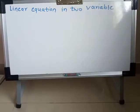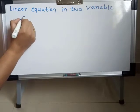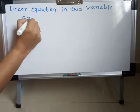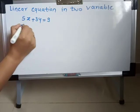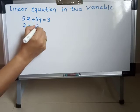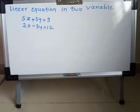In our book, practice set 1.1, we have the first activity question. The activity says: complete the following equations. The equations are 5X plus 3Y is equal to 9, and 2X minus 3Y is equal to 12. We need to solve these equations and find the values of X and Y.